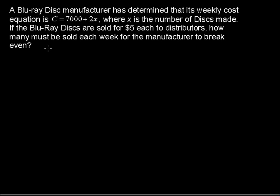A Blu-ray disc manufacturer has determined that its weekly cost equation is C equals 7,000 plus 2x, where x is the number of discs made. If the Blu-ray discs are sold for $5 each to distributors, how many must be sold each week for the manufacturer to break even?